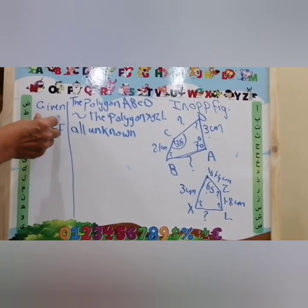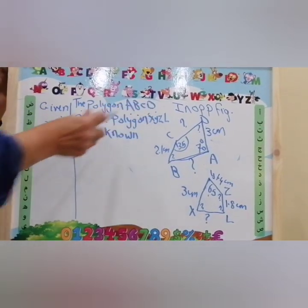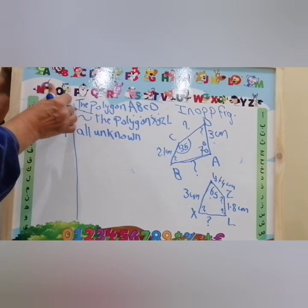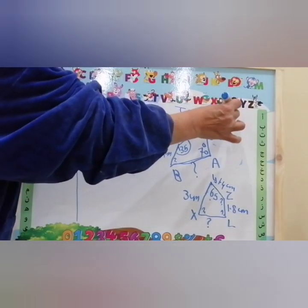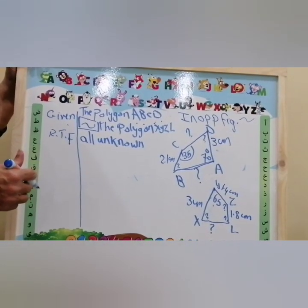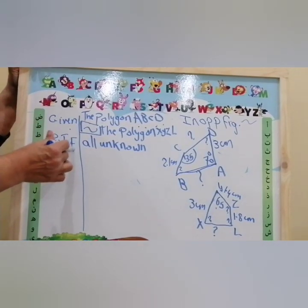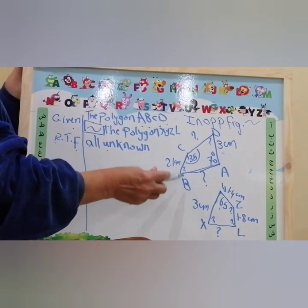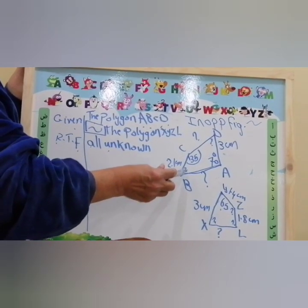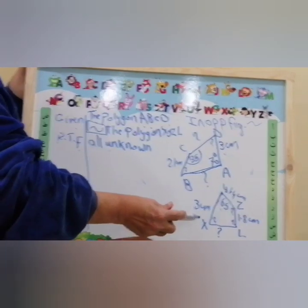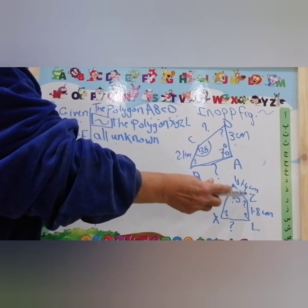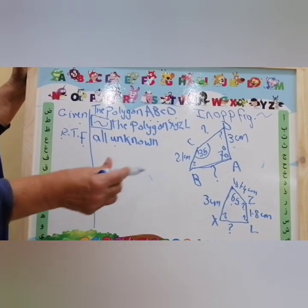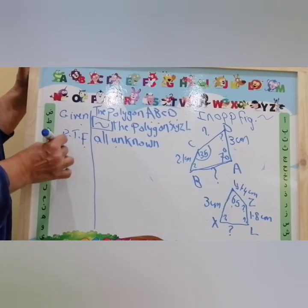Example 1. Given: polygon ABCD is similar to polygon XYZL. Look at the similarity sign — like the approximation sign without the line below. Required: find all unknown elements — all unknown angles in ABCD, find measure angle B and measure angle D, and in polygon XLZY find measure angle X, L, and Z.